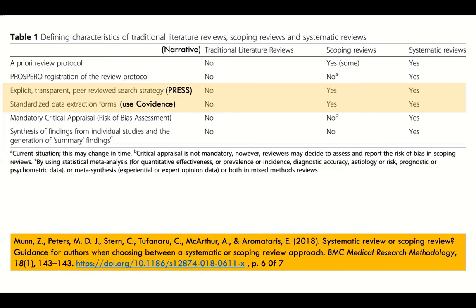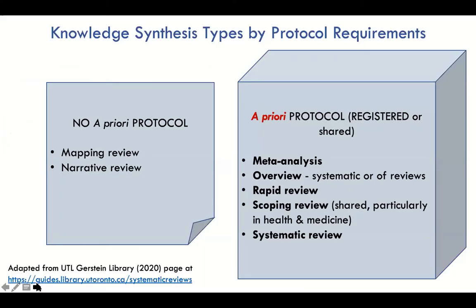I recommend reading the entire Munn article — it's only seven pages, not dense, and very accessible. Regarding protocol requirements: only narrative reviews do not involve protocols. Everything else involves them, and often requires them. Scoping reviews don't strictly require protocols, but they are a great idea and strongly recommended.